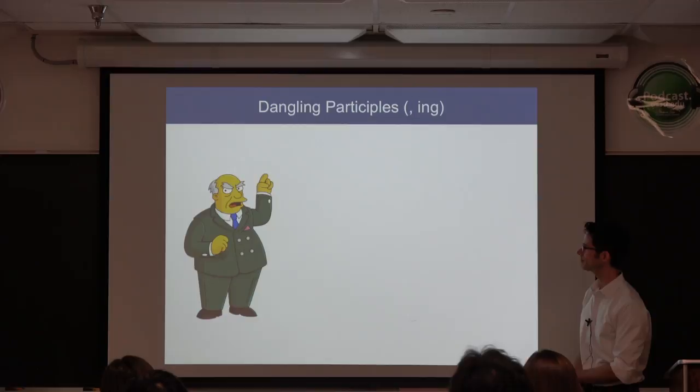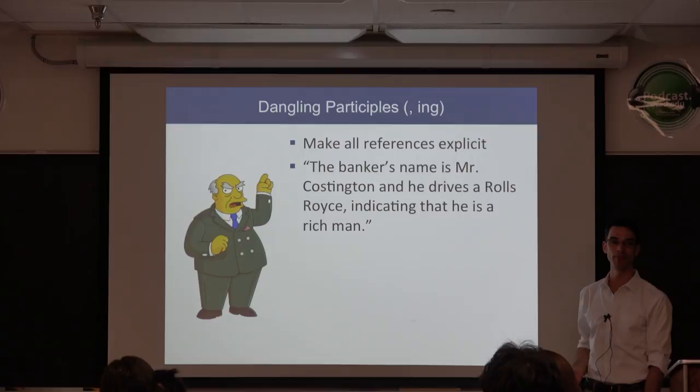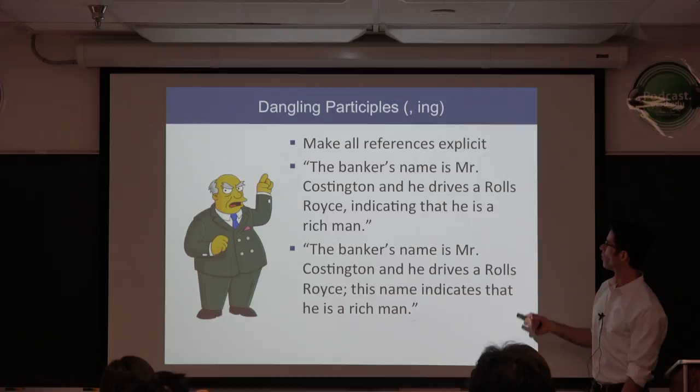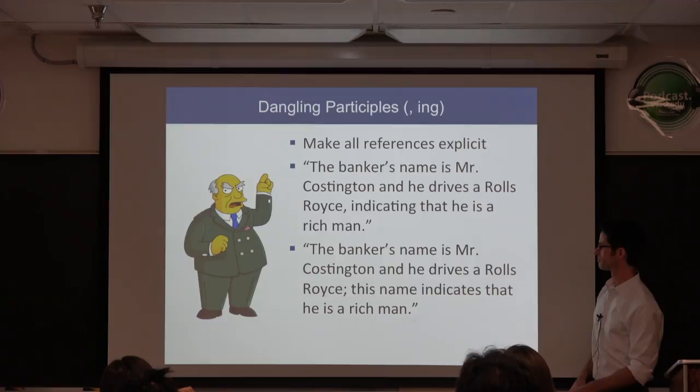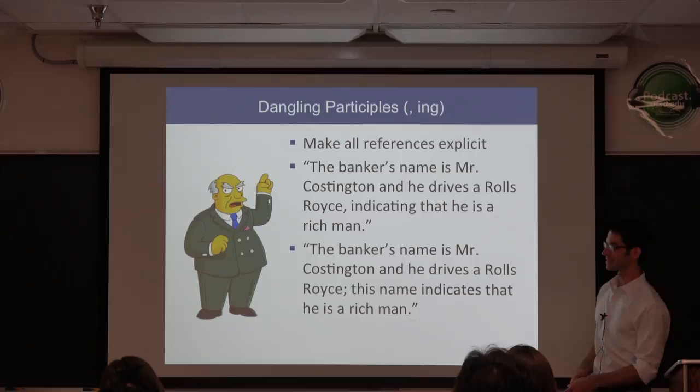Dangling participles — make all references explicit. 'The banker's name is Mr. Costington, and he drives a Rolls-Royce, indicating that he is a rich man.' The dangling participle is almost always signaled by the construction 'comma, something-ing.' What about this clause indicates that he's a rich man — the name? The car? Make references explicit: 'The banker's name is Mr. Costington, and he drives a Rolls-Royce. This car indicates he is a rich man' — if that's what you mean.